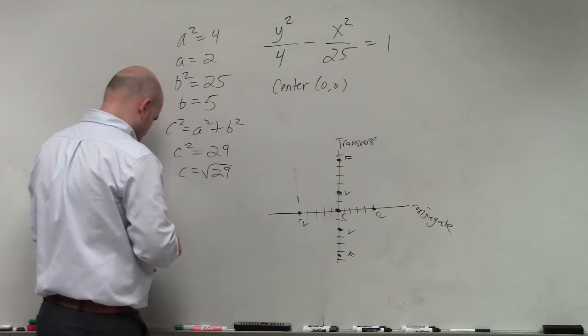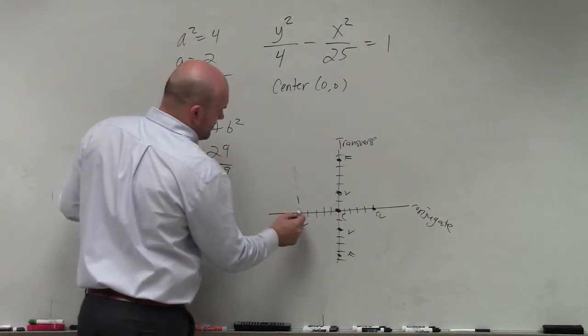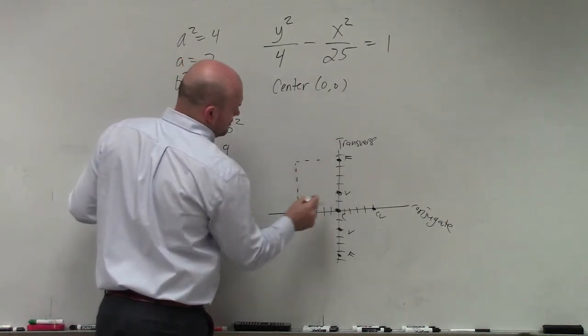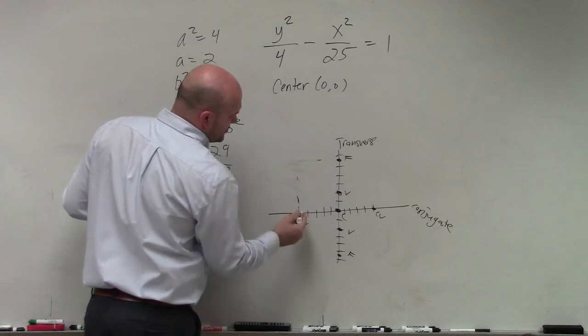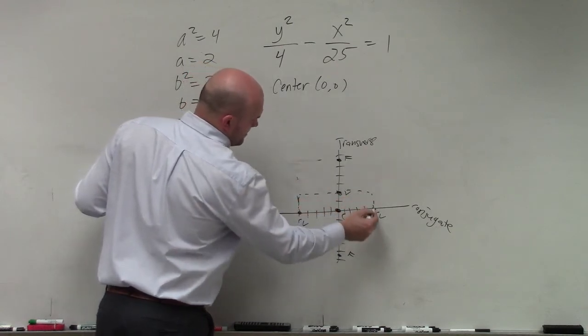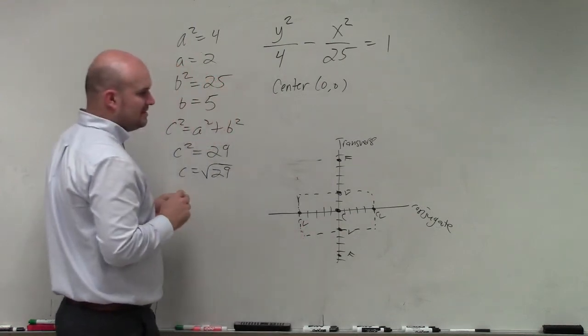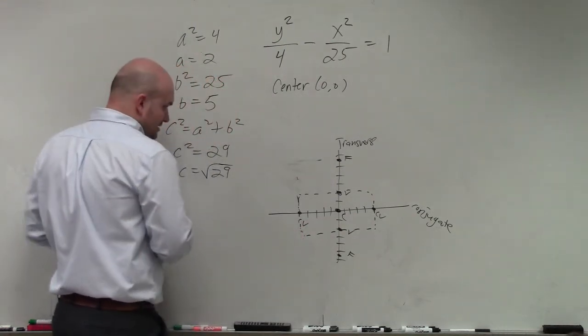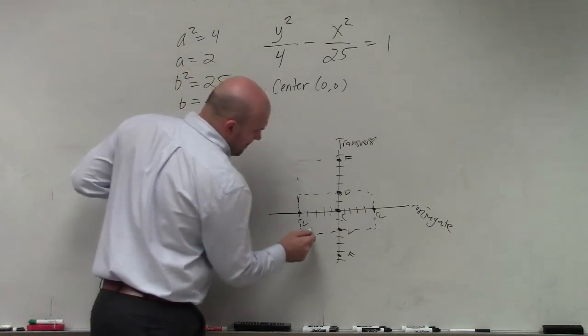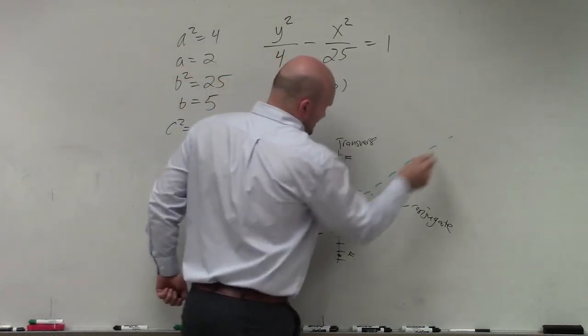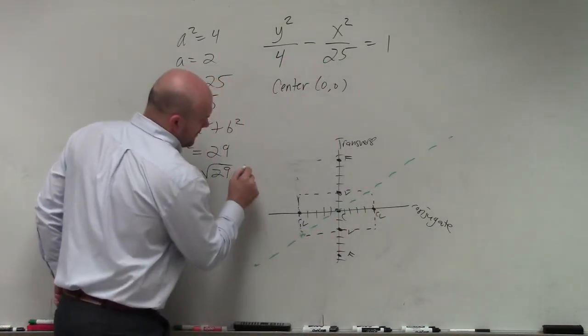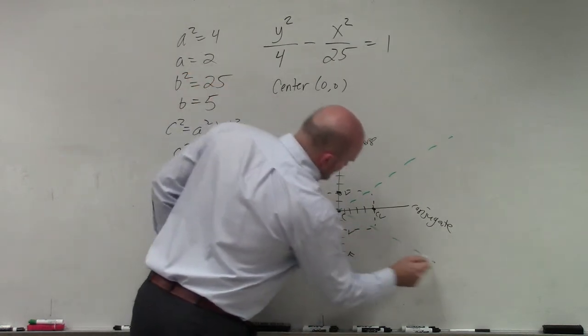Let's use, I'll do it with this. Oops, I'm sorry. Use your co-vertices and your vertices. Because now what I'm going to do is connect my corners, going through my center to find my asymptote. OK?